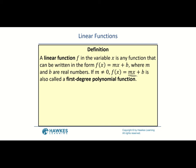The form mx + b should be very familiar — we're used to writing y = mx + b, which is slope-intercept form. When we write f(x) instead of y, we're indicating that this equation is a function, specifically a linear function.